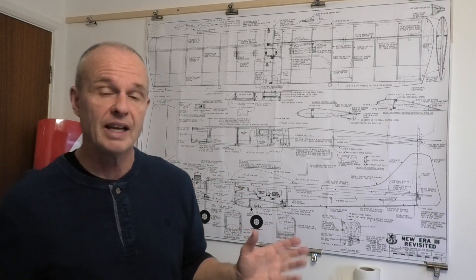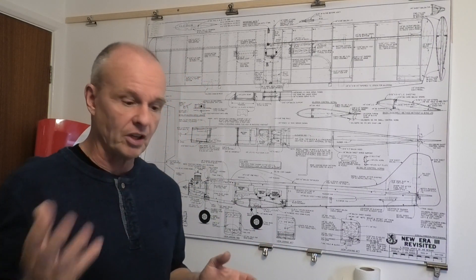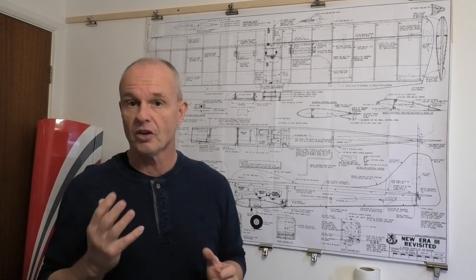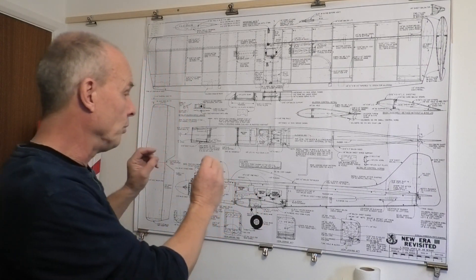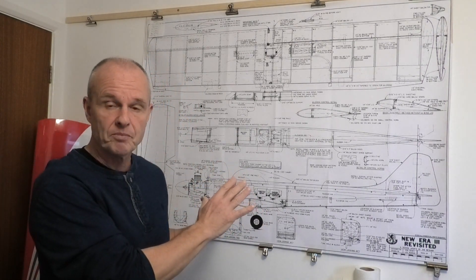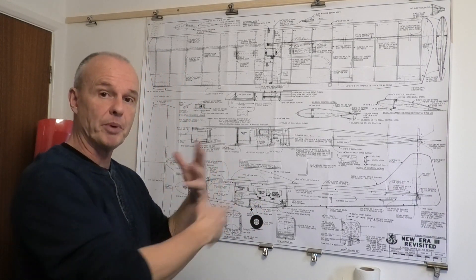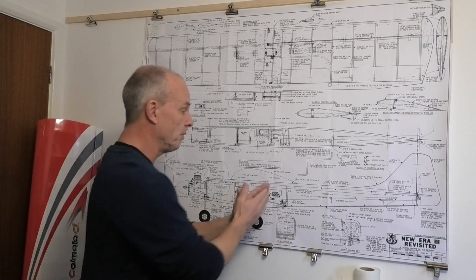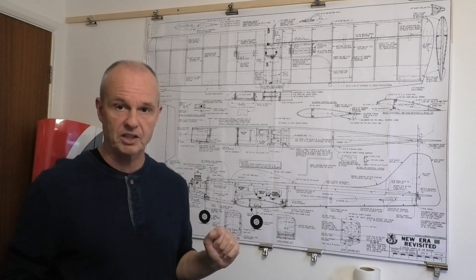It was originally designed in 1969 by Chuck Cunningham and Don Dewey and appeared in RCM magazine. Since that time it's been changed a little bit, the most notable thing being the extension of the fuselage.